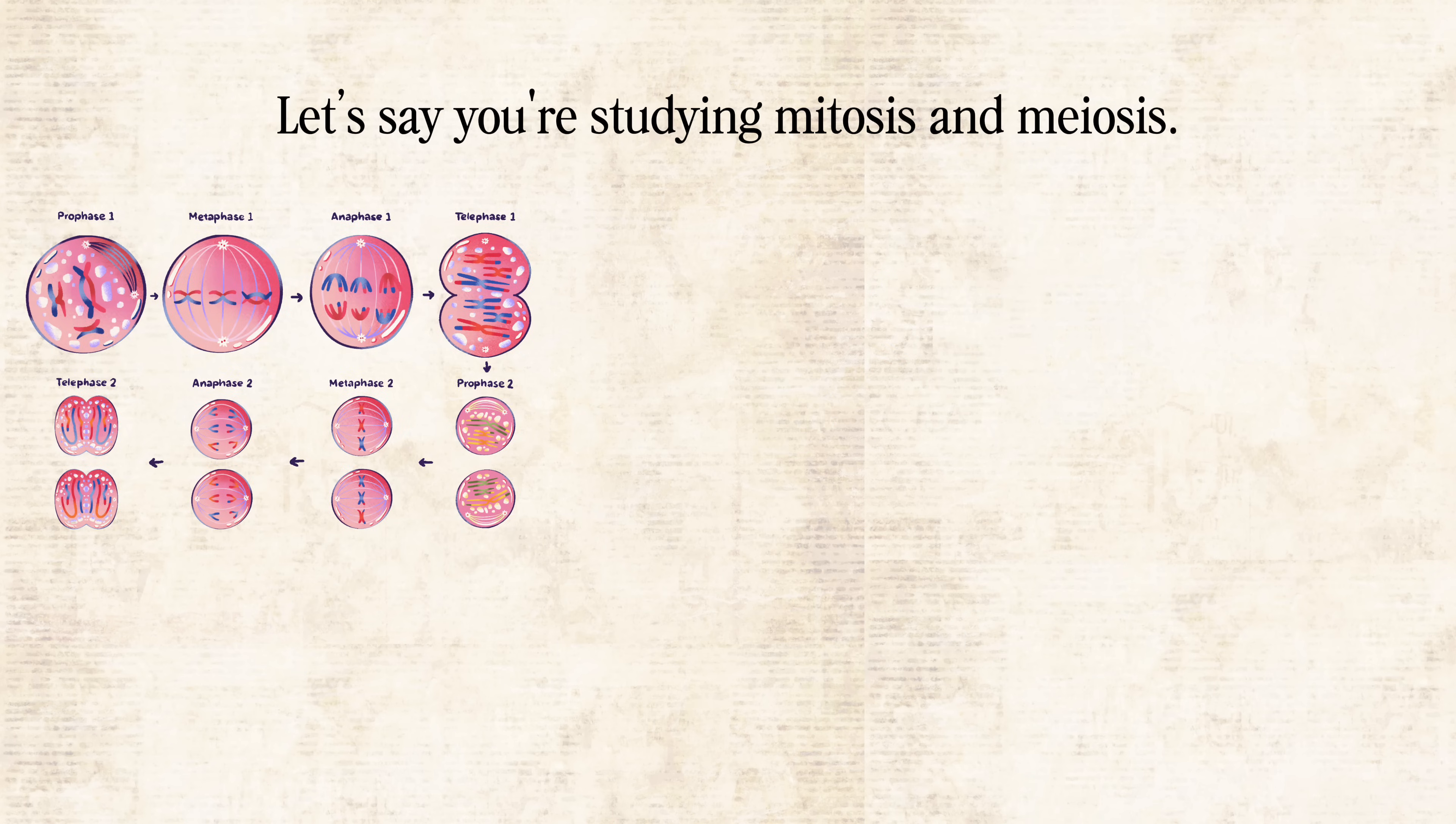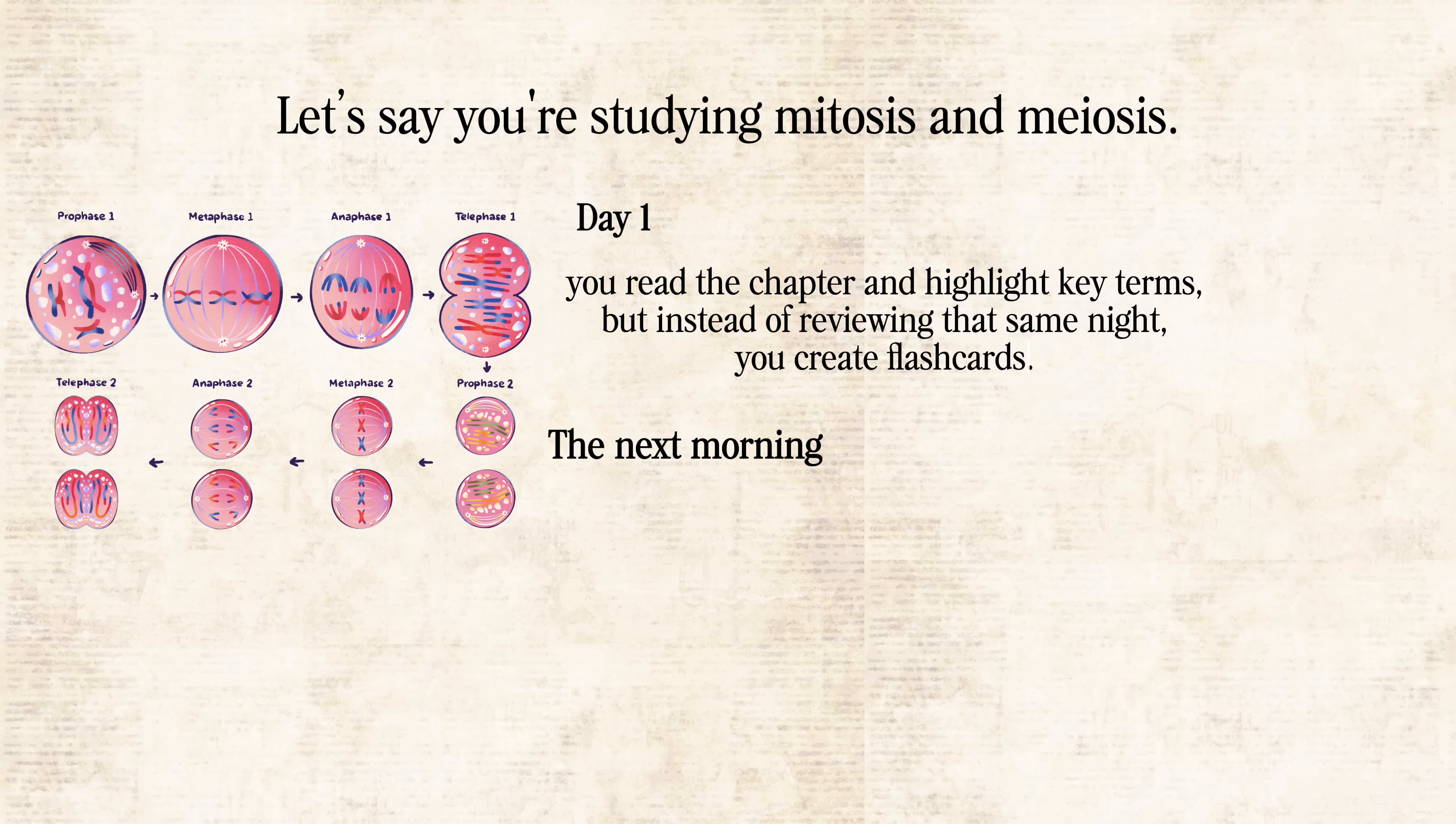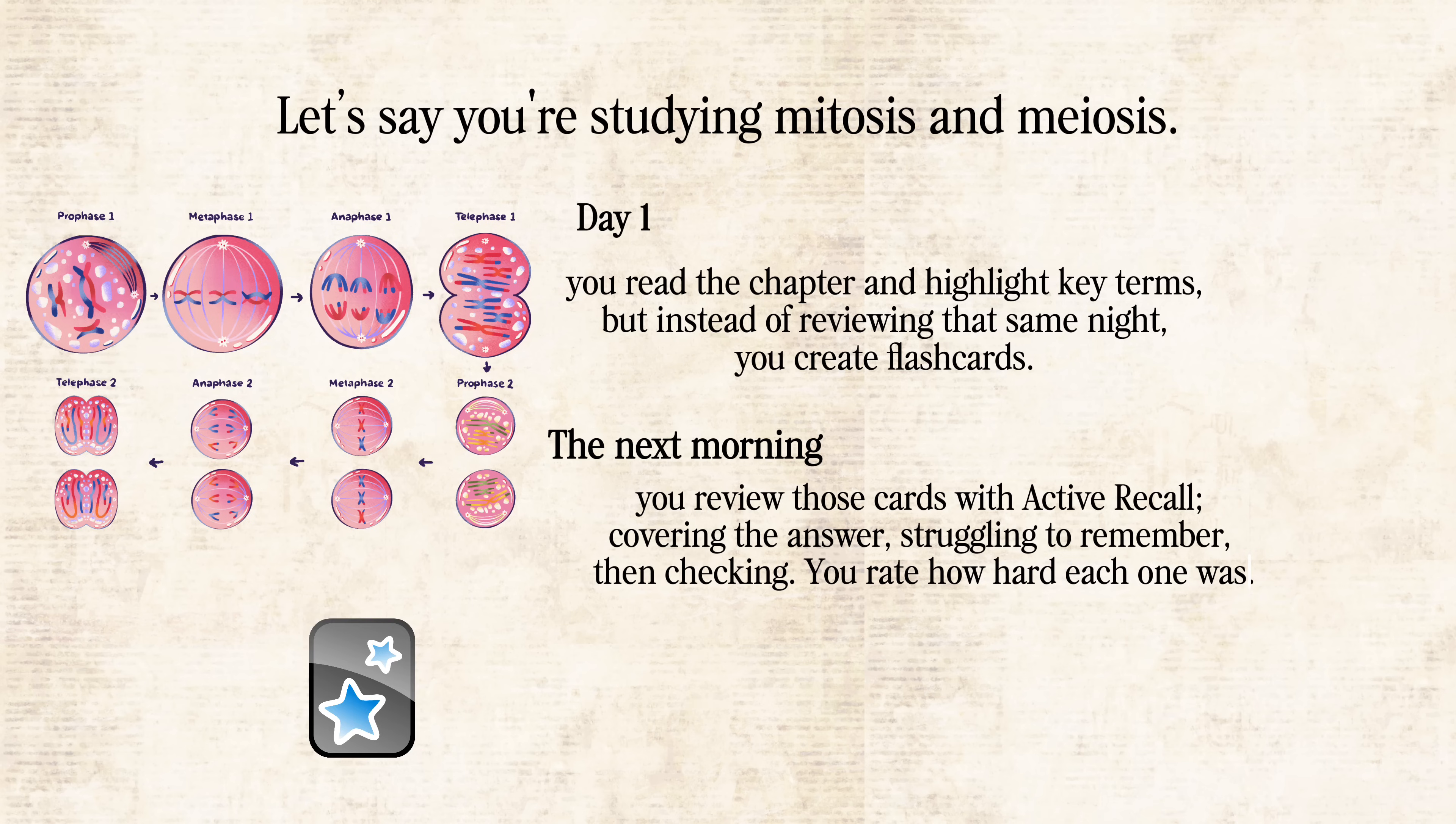Let's say you're studying mitosis and meiosis. On day one, you read the chapter and highlight key terms. But instead of reviewing that same night, you create flashcards. The next morning, you review those cards with active recall, covering the answer, struggling to remember, then checking. You rate how hard each one was. Anki will then schedule the next review for each card automatically, maybe in two days, five days, or a week, depending on how well you knew it. That's spaced repetition in action.